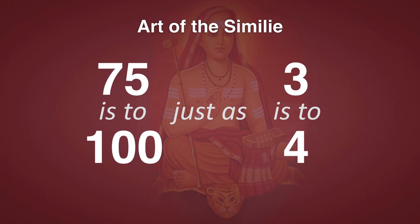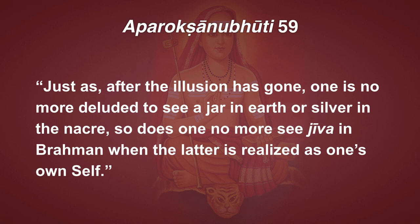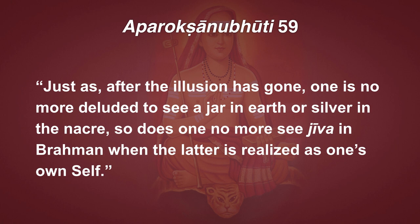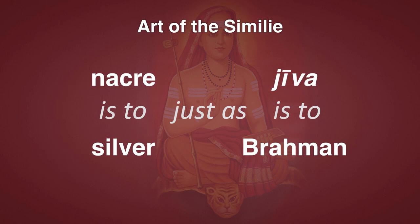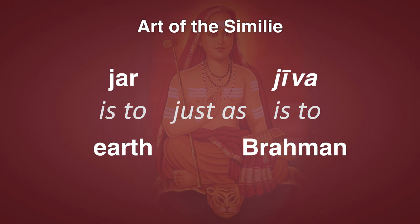Now let's look at the first simile from Aparoksha Anubhuti: Just as, after the illusion has gone, one is no longer deluded to see a jar in earth or silver in the nakre, so does one no more see jiva in Brahman when the latter is realized as one's own self. So putting that in equation format: nakre is to silver, just as jiva is to Brahman. And similarly, a jar is to earth, just as jiva is to Brahman.